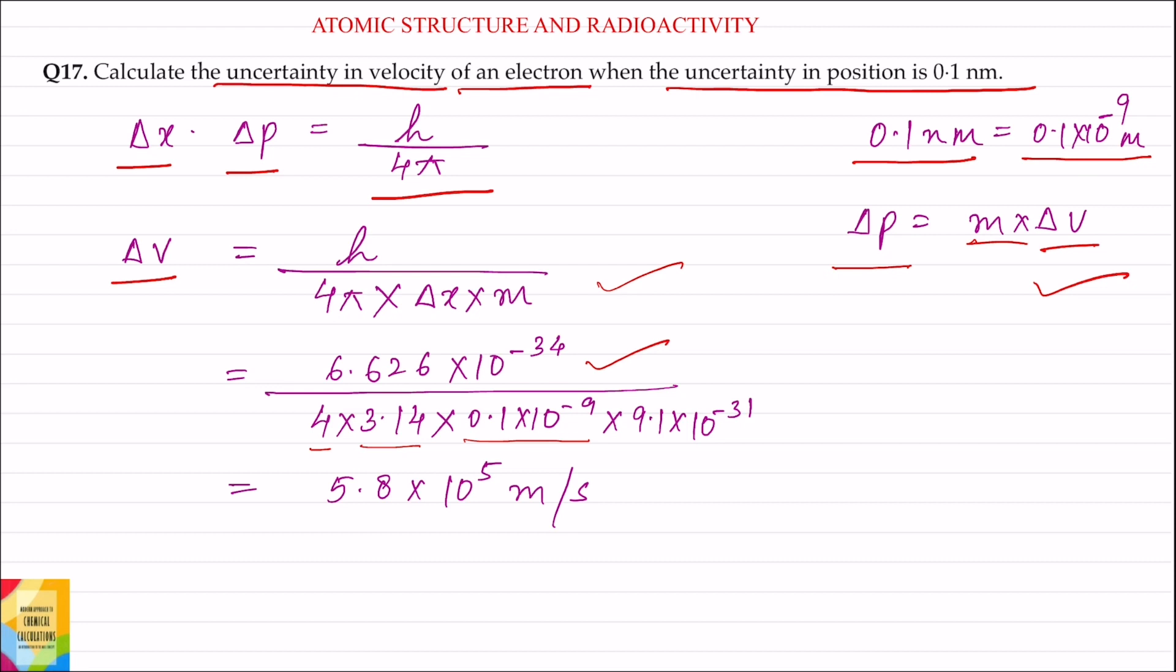The value for the mass of electron will be 9.1 into 10 to the power minus 31 kg. Solving this equation, the value for delta v or uncertainty in velocity will be 5.8 into 10 to the power 5 meter per second.